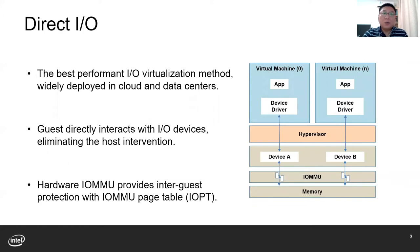As you may know, DirectIO is the best-performing method, widely deployed in cloud and data centers. With the hardware device assigned to the virtual machine, guests can perform DMA operations directly without the need of host intervention. At the host side, the hypervisor programs the hardware IOMMU page table, the IPT, to provide inter-guest protection.